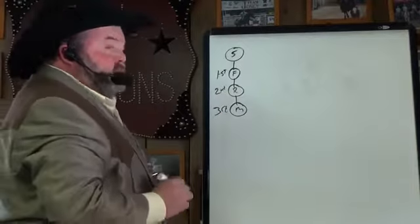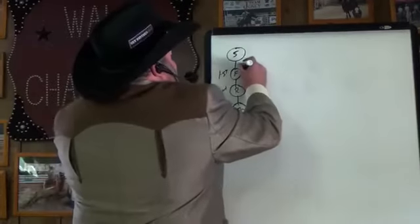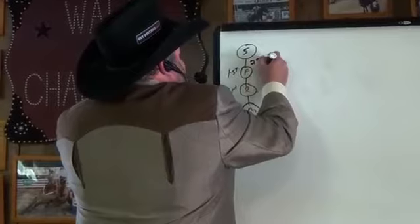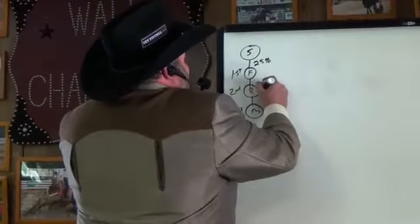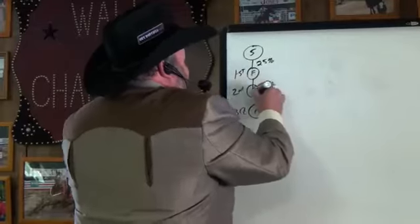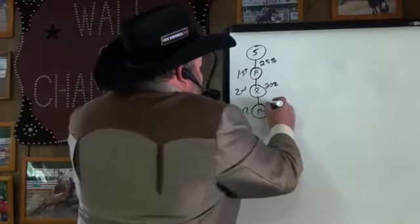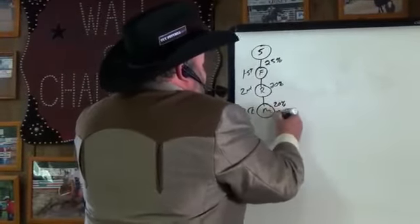First, second, third. Susie can pick up a 25% match off Fred. She can pick up another 20% on Ralph, and another 20% match on Mark. First generation matching bonus, second generation, third generation.